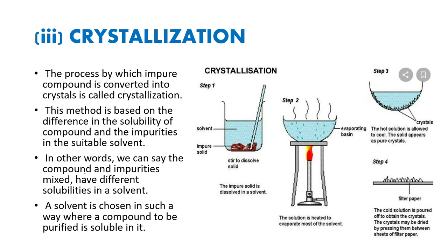Crystallization is the most commonly used technique for the purification of solid organic compounds. This process converts impure compounds into pure crystal form. This method is based on the difference in the solubility of a compound and the impurities in a solvent. The compound and its impurities have different solubility points in that solvent.